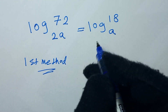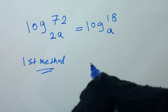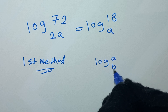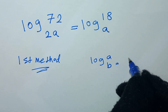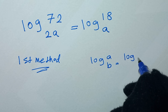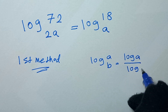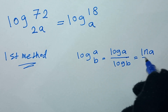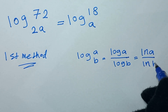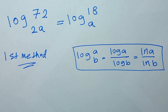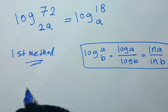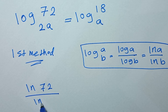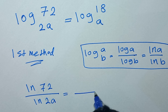From log rules, if we have log of a to base b, we can write this as log of a over log of b, or as ln of a over ln of b. So in here we can write this as ln of 72 over ln of 2a is equal to